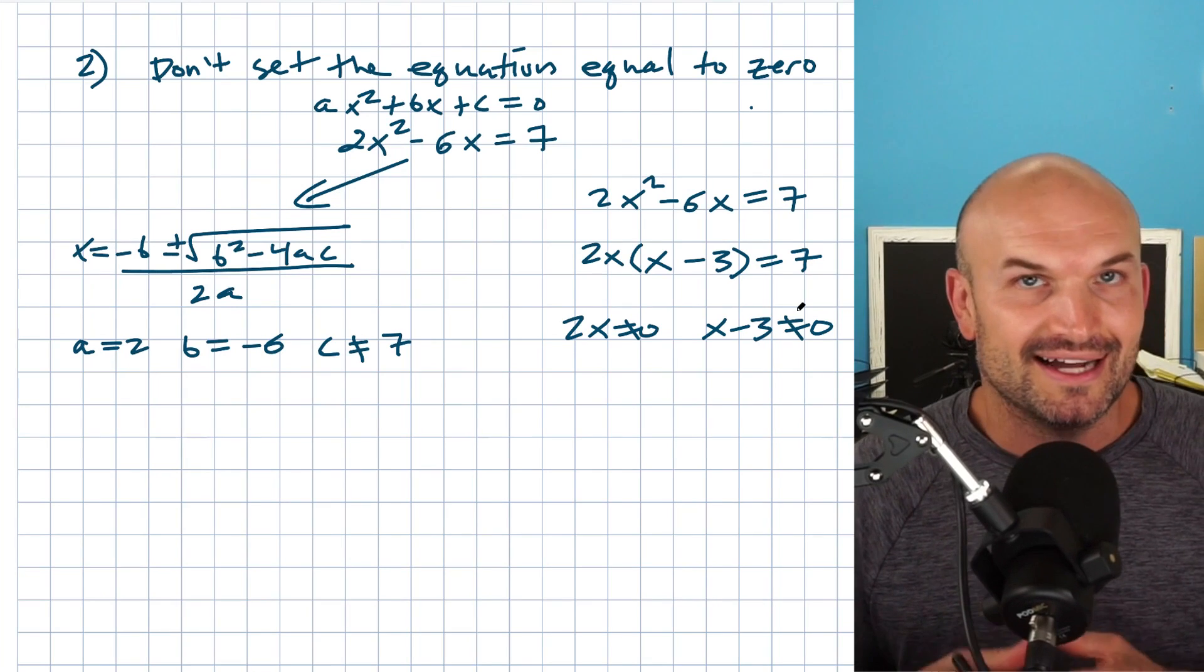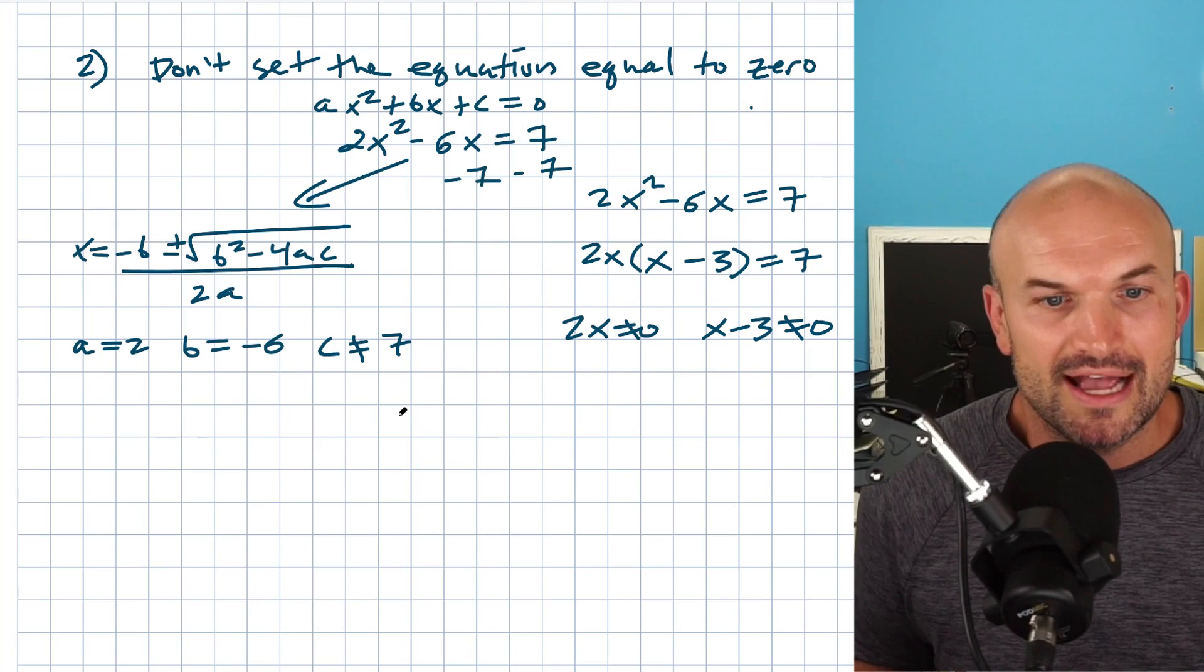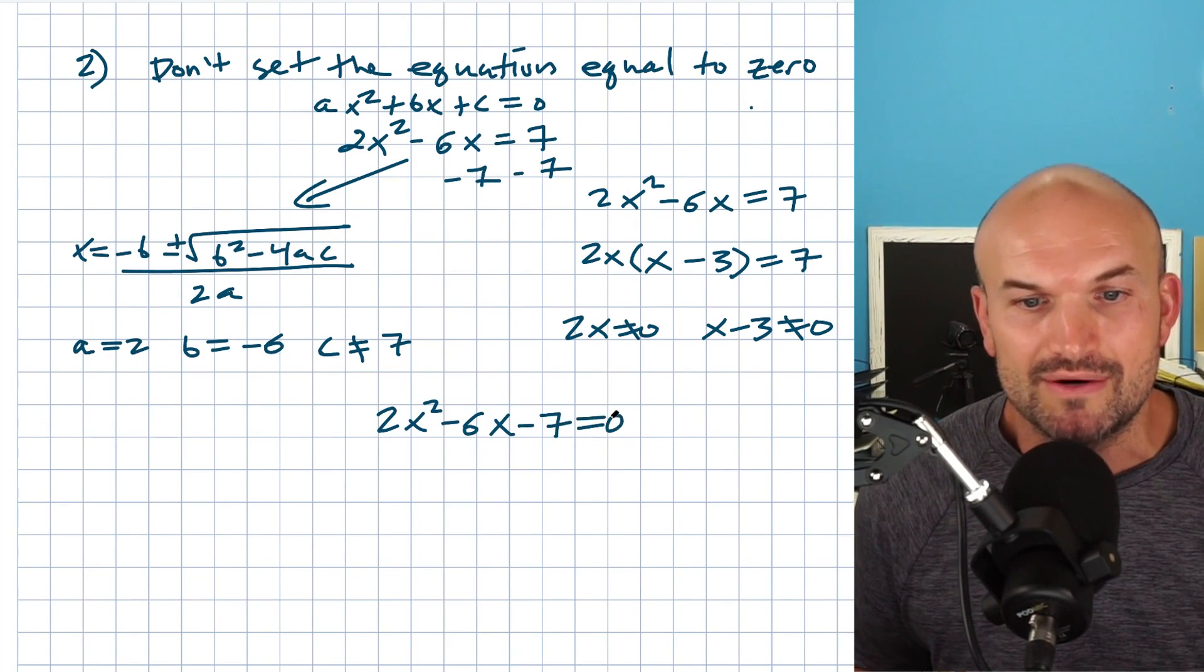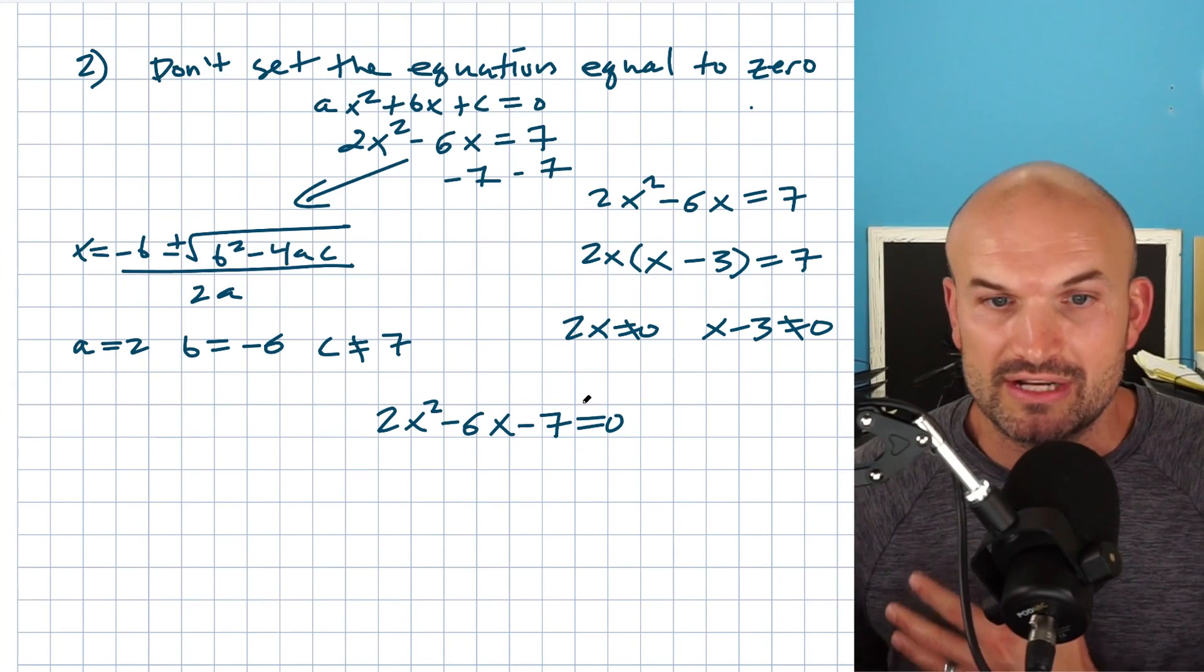Those are not correct. Again, what you're simply going to do is subtract the seven to the other side. So subtract the seven to both sides here. And then you'll have the equation two X squared minus six X minus seven equals zero. And now you can try to see if that is factorable or go ahead and use the quadratic formula.